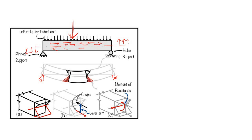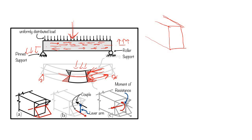If we cut a particular cross-section, above the neutral axis all the fibers are compressed, and all the fibers below are in tension. So in perspective view: above the neutral axis all fibers are compressed, and below the neutral axis all fibers are in tension.